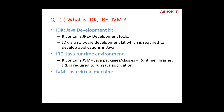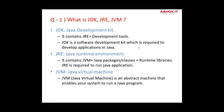JVM stands for Java Virtual Machine. When you run a Java program, the Java compiler first compiles your Java code to bytecode, and then the JVM translates that bytecode into native machine code. That machine code is executed by the operating system. JVM makes Java platform independent, but JVM itself is platform dependent.